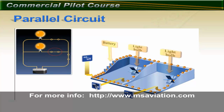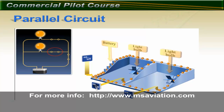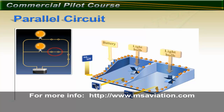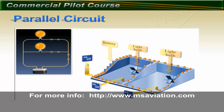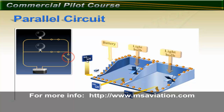Turning the switch back on in any of these parallel circuits restores the path of electricity in that branch. There is another switch just after the battery. This switch is connected in series to the other two switches. If this switch is turned off, the entire electrical circuit is interrupted and stops.